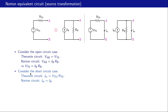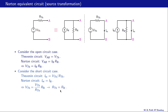Using the first relationship, we substitute i-n with v-th divided by r-th. Then we get v-th equal to v-th divided by r-th, times r-n. The v-th cancels out and we get r-th equal to r-n. So if we know the Thevenin equivalent circuit, we can obtain the Norton equivalent using these relationships.